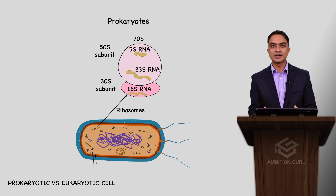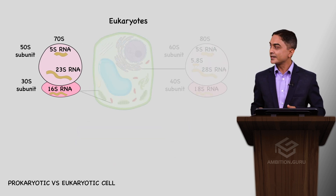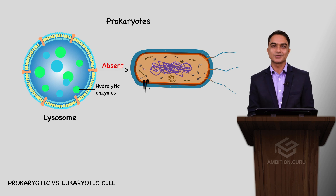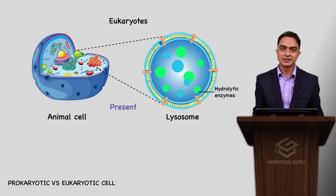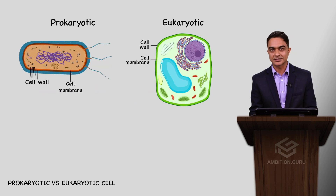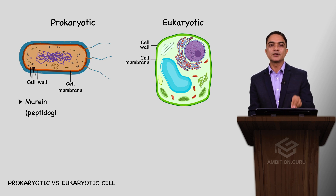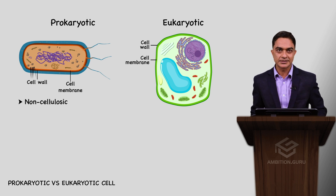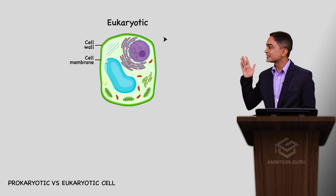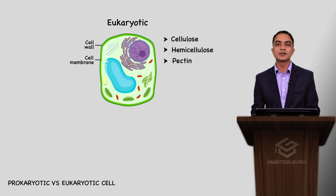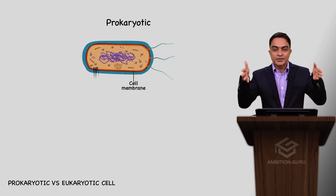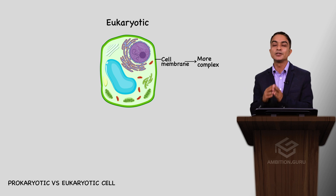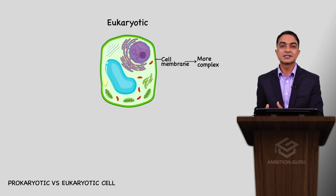Regarding organelles: ribosomes in prokaryotes are 70S, while in eukaryotes both 70S and 80S ribosomes are present. Lysosomes are absent in prokaryotes but present in eukaryotic cells. Cell walls are present in both, but in prokaryotes the cell wall is made up of murein, peptidoglycan, or mucopeptide and is non-cellulosic. In eukaryotes, the cell wall is cellulosic, containing hemicellulose and pectins. The prokaryotic cell membrane is less complex, while the eukaryotic cell membrane is highly complex.